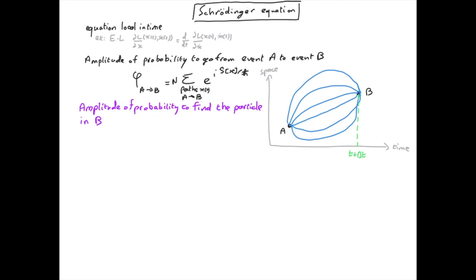It's not exactly the same question as finding the amplitude of probability to go from one event to another. Here we are looking only at one event. We will use a different letter, we will call it psi, and this is a function of space and time.